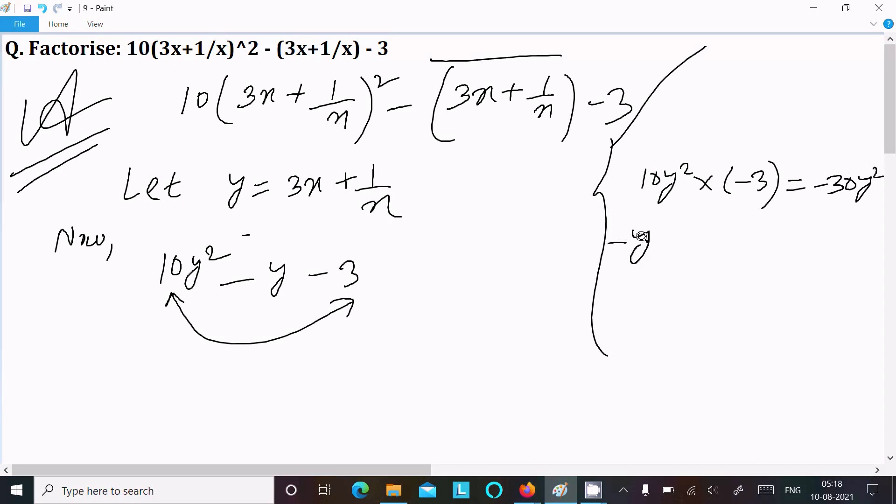So writing 10y² into minus 3, so multiply y, it comes minus 30y². After that take the middle term.